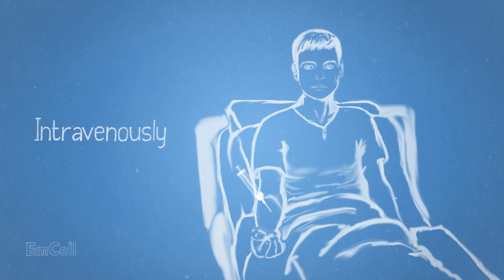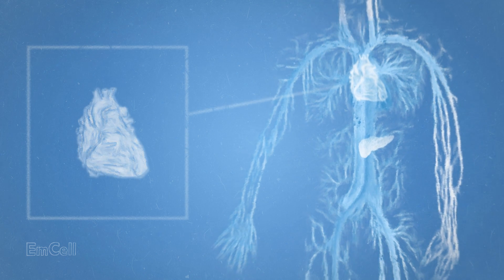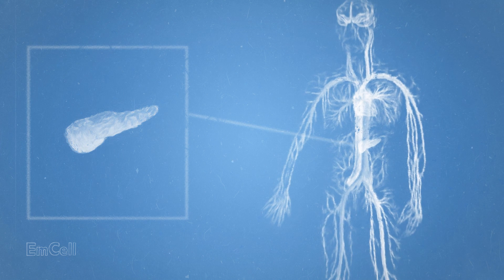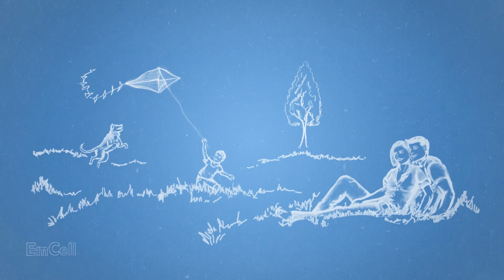Following administration, stem cells migrate to the affected area, engraft, multiply and differentiate, which facilitates replacement of lost or damaged cells and increases paracrine effects, effectively restoring impaired body functions.